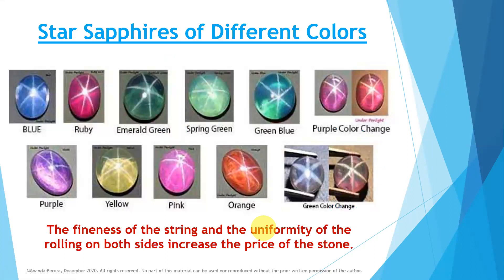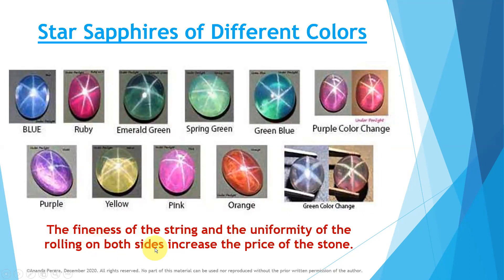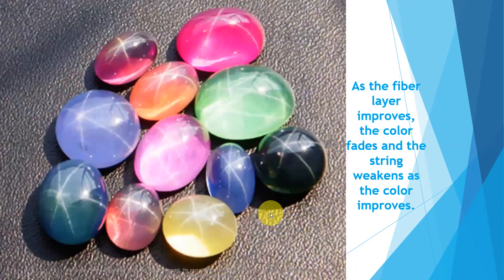These are star sapphires of different colors. Look at the colors — all the stars. Yellow star sapphires are very rare; the reason you can learn when you come to lesson 52. Then there are color change stars — in natural light and artificial light. The fineness of the string and the uniformity of the rolling on both sides increase the price of the stone. As the fiber layer improves, the color fades and the string weakens. When the color improves, the string is weak; when the string is powerful, the color is dull. It is natural.